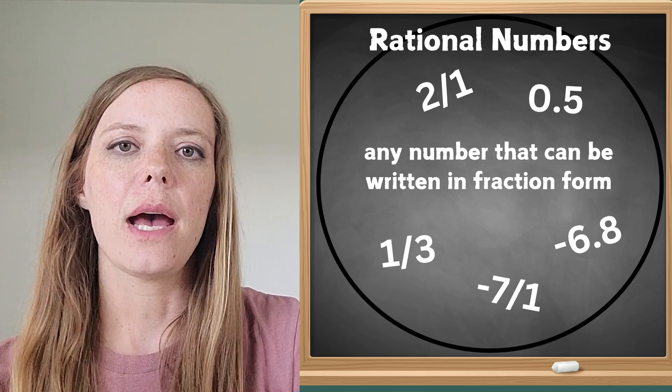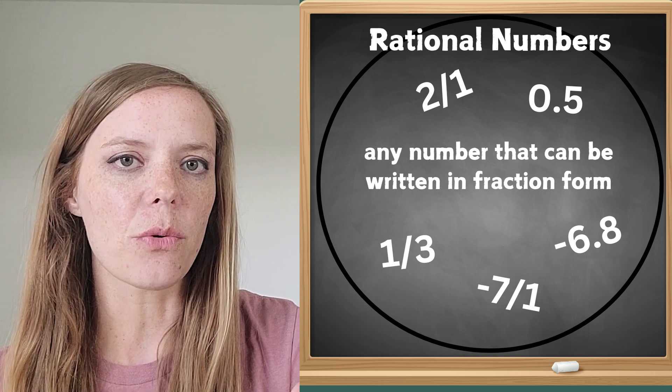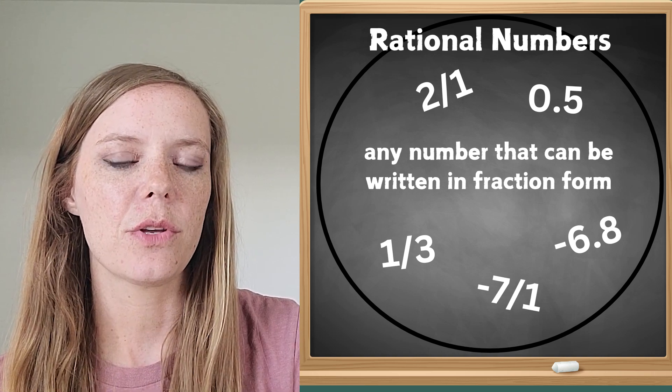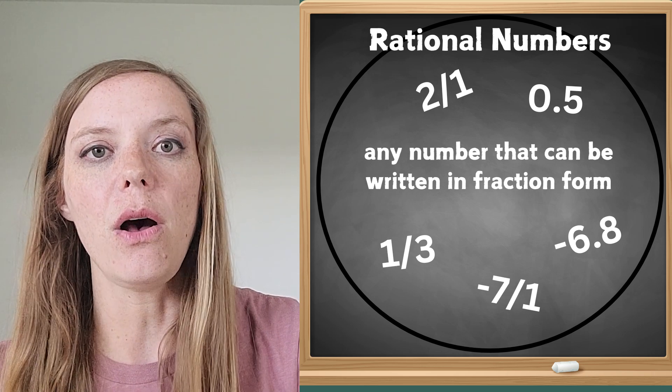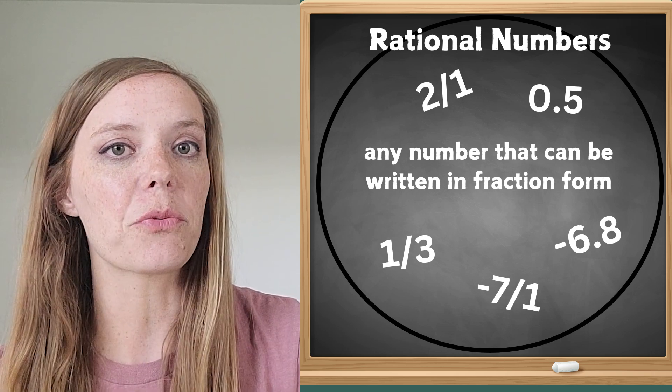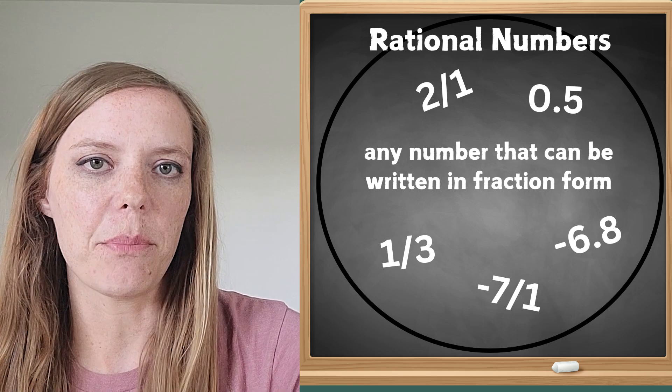And as we keep learning about different types of numbers, you're going to notice that rational numbers are the broadest category that we're going to talk about. It's the biggest circle. As we get inside the circle with some different types of numbers you're going to notice it's getting a little bit more specific as we go, but they all can be called rational numbers.